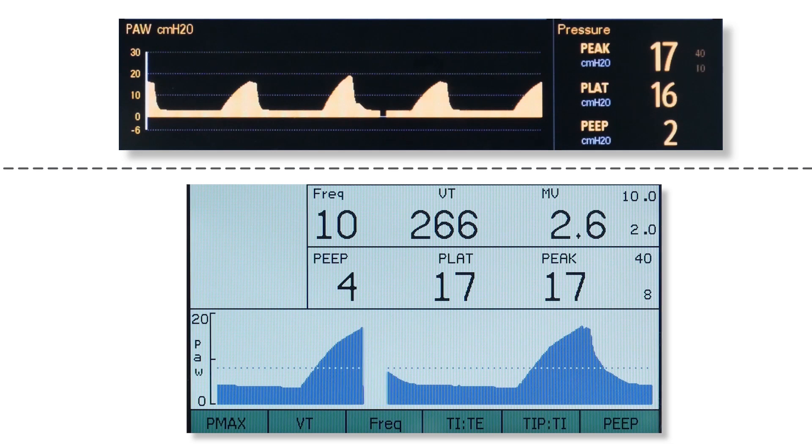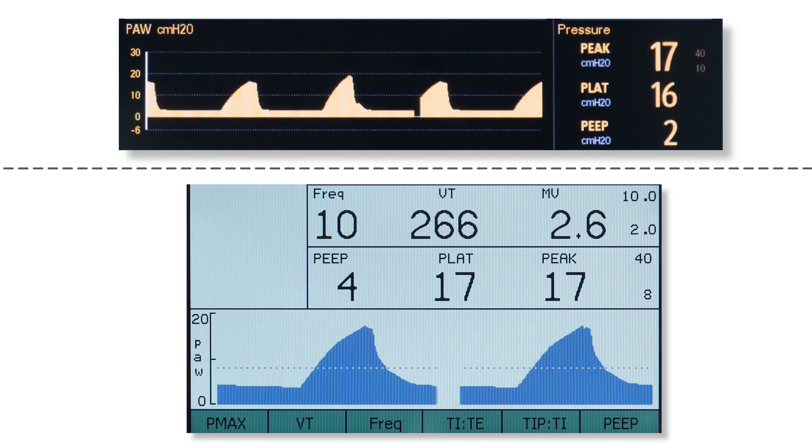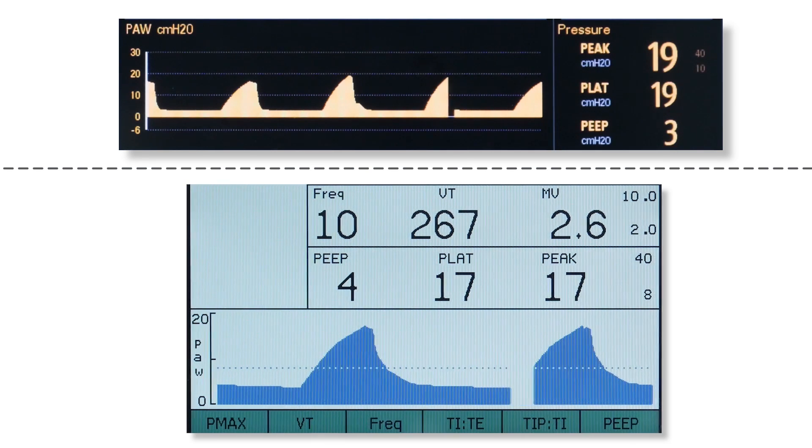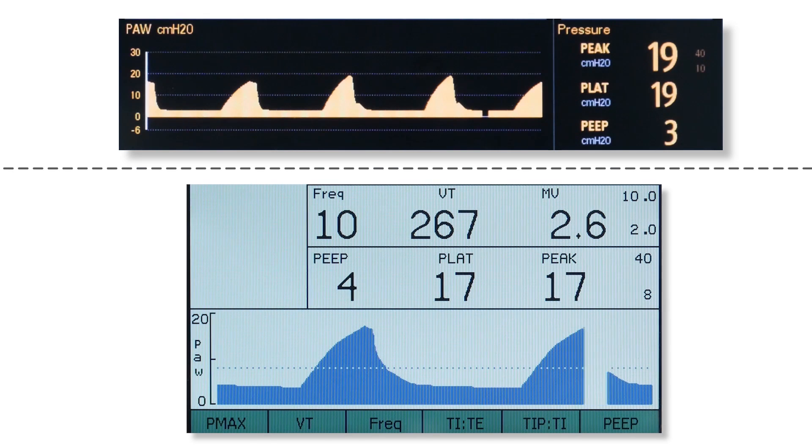No change in tidal volume delivered to the test lung on the Fabius and no excessive airway pressure. On the other hand, you can see on the ventilator without fresh gas decoupling that the pressure delivered to the patient changes due to the change in fresh gas flow.